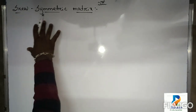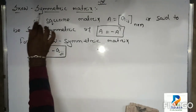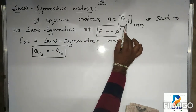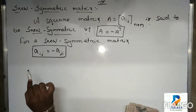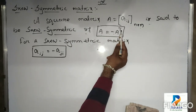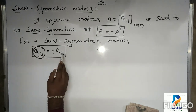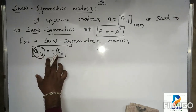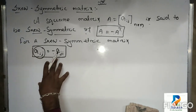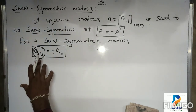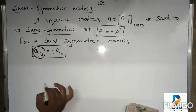The second one is skew symmetric matrix. A square matrix A = [aij] of order n×n is said to be a skew symmetric matrix if A equals minus A transpose. That means aij equals minus aji. Remember, in symmetric matrix aij equals aji, but here in skew symmetric matrix aij equals minus aji.